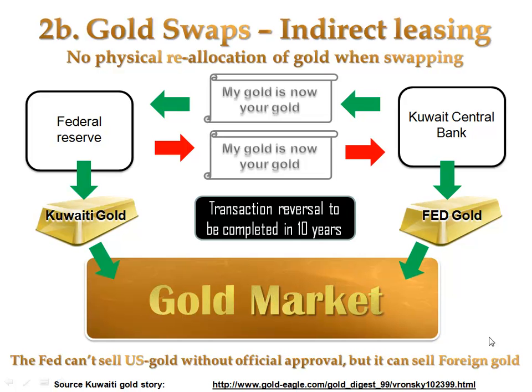Now for the infamous gold swaps. Gold swaps are very similar to direct leasing. The difference is that gold swaps occur indirectly and usually take place between two central banks. In the version depicted on this sheet, two central banks swap gold reserves and then carry out the action of direct leasing of each other's gold.